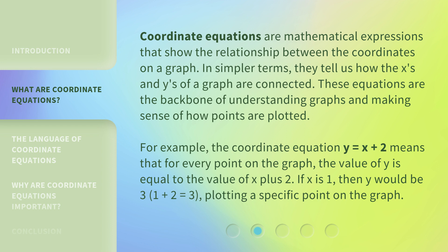For example, the coordinate equation y equals x plus 2 means that for every point on the graph, the value of y is equal to the value of x plus 2. If x is 1, then y would be 3. 1 plus 2 equals 3, plotting a specific point on the graph.